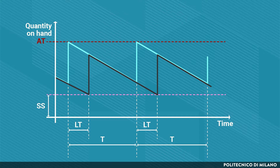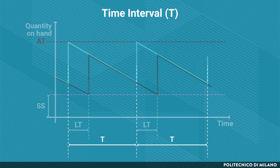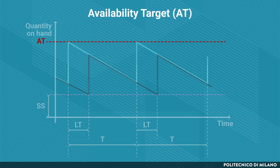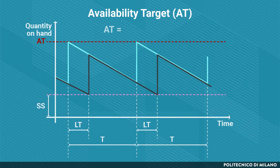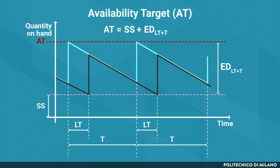The two main parameters of the periodic review model are, first, the time interval t, which should be defined in order to minimize the total costs, similarly to the economic order quantity in the reorder point model. Please refer to the following lectures to understand how the optimal t could be found. Second, the availability target — that is, the value of availability to be reached when an order is issued. The availability target can be calculated as the sum of two quantities: the average value of the safety stocks and the expected demand during the order interval t and the replenishment lead time.